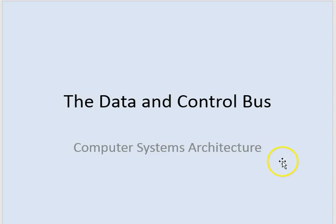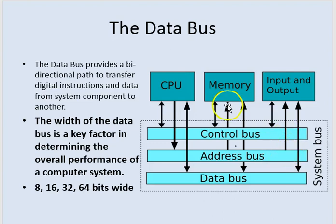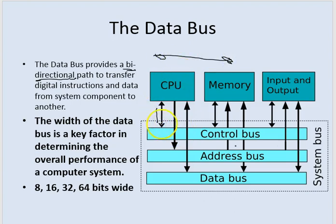Let's talk about the data and control bus, starting with the data bus. The data bus provides a bi-directional path — that means it travels in two ways. You can see here the data bus travels in two directions between components. The width of the data bus is a key factor in determining the overall performance of a computer system.